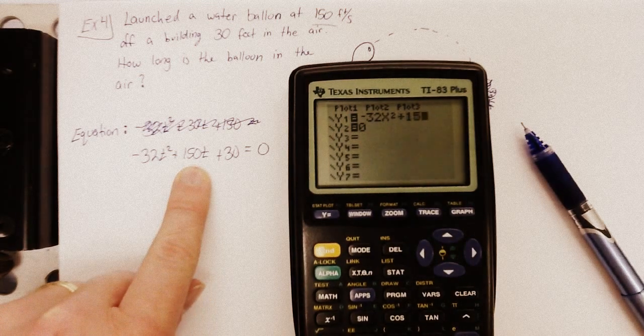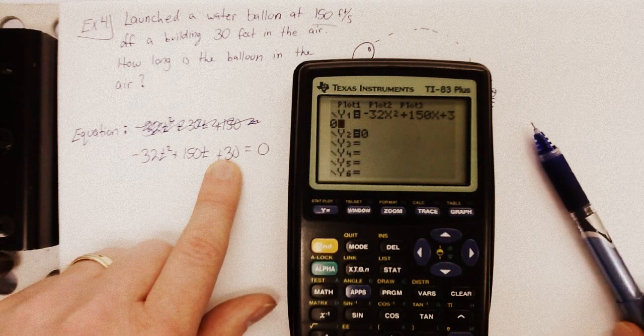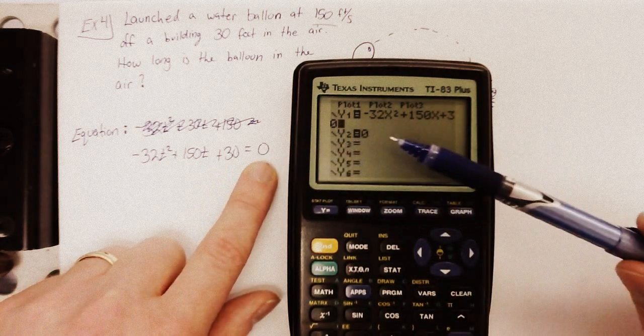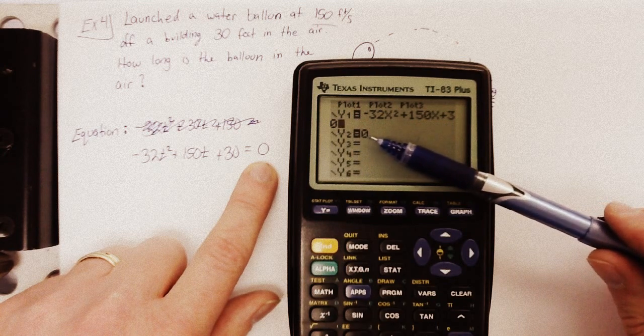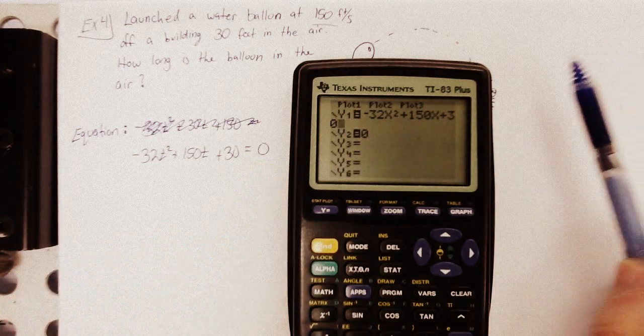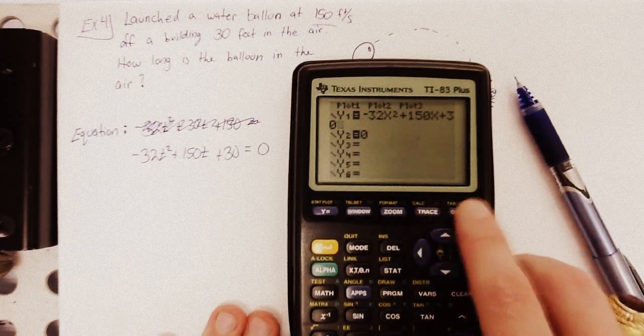That's plus 150t. In this case, we'll use x again. Plus 30. And, we have the other equation equal to zero. The other side equals zero. So, put it in for y2. All right. So now, let's hit graph.